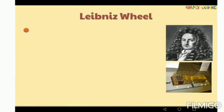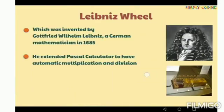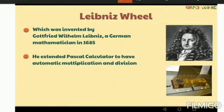Next is the Leibniz Wheel, invented by Gottfried Wilhelm Leibniz, a German mathematician. The device was developed in 1685. He extended Pascal's calculator to have automatic multiplication and division. We can also say that this is the improved version of the Pascaline.